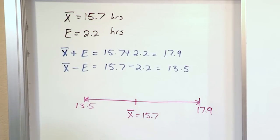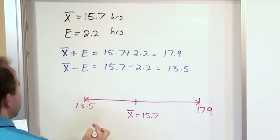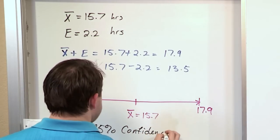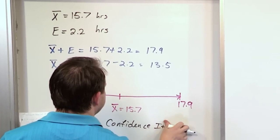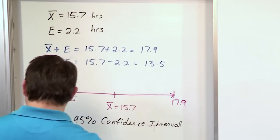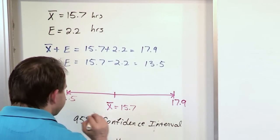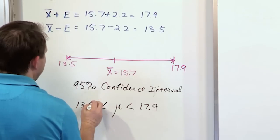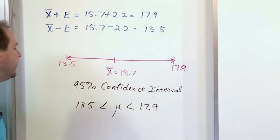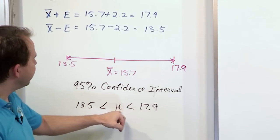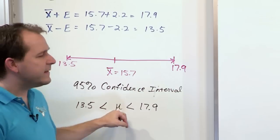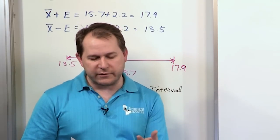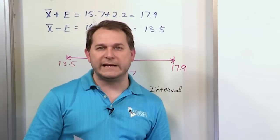Do you see how the point estimate lies in the center of this thing we're calling the confidence interval? The way you write it down is you would say 95% confidence interval: the population mean μ is less than 17.9 and greater than 13.5. This is everybody in the population, and the parameter you're looking at is how many hours per week that they read.